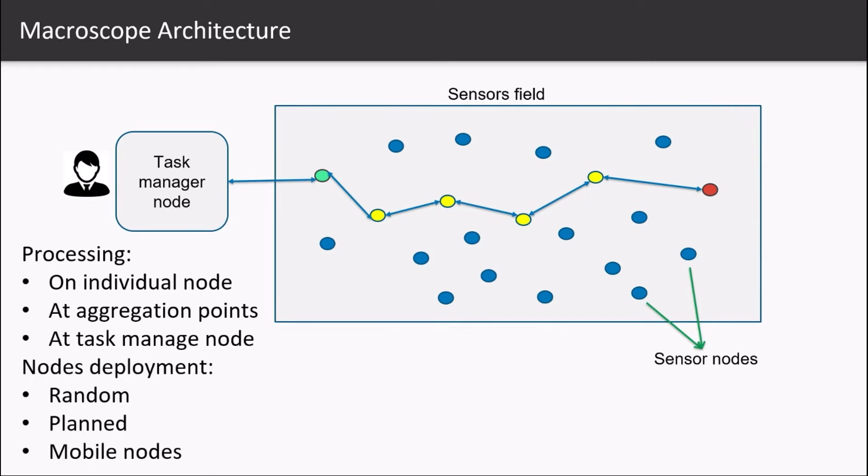Nodes can be deployed in a random manner like throwing the nodes from the aeroplane in the forest or either they can be planned. For example, installing them in the smart cities or sometimes mobile nodes also exist.